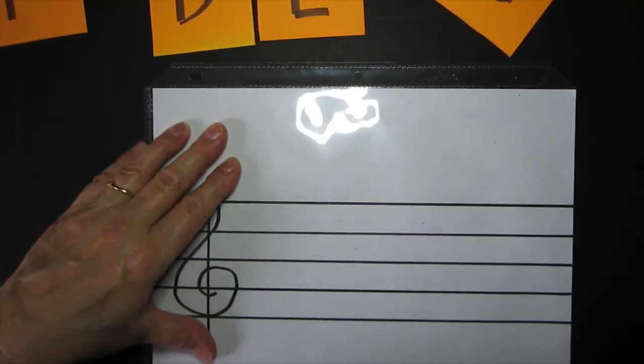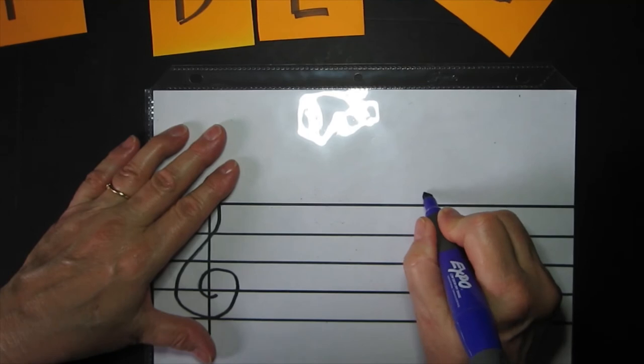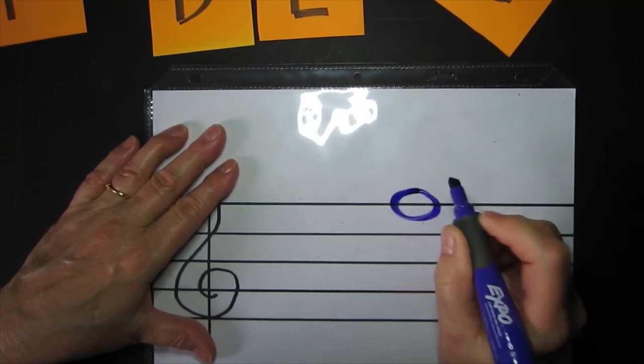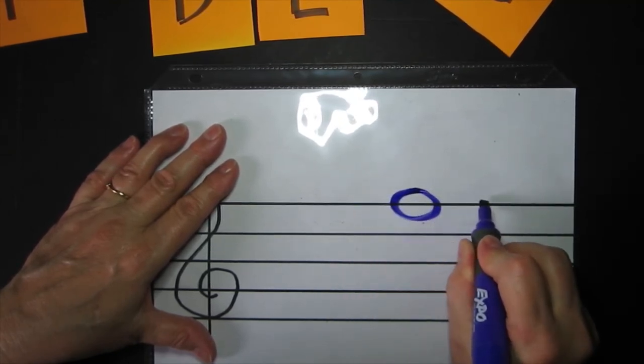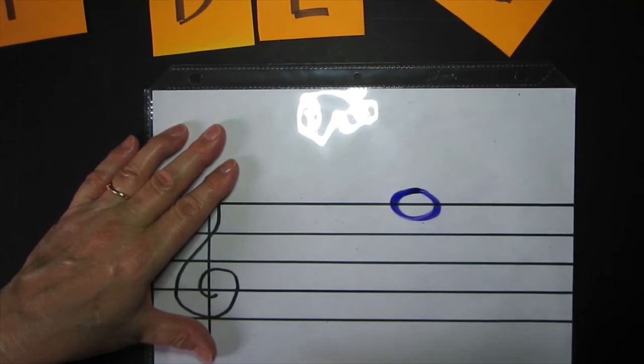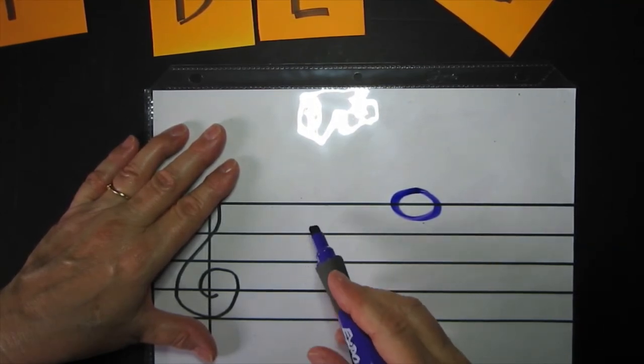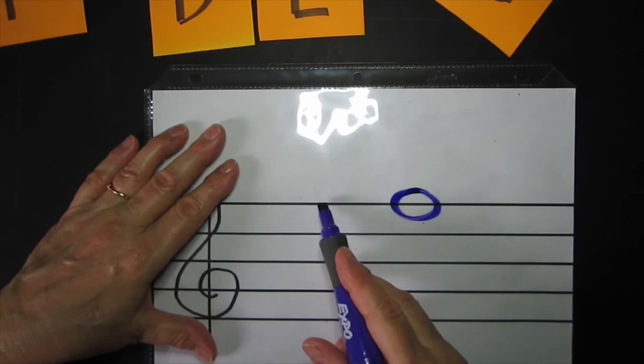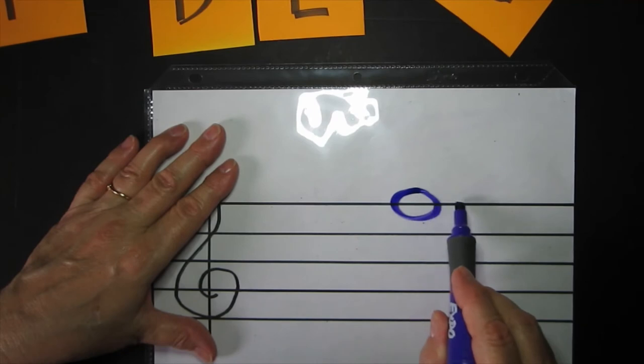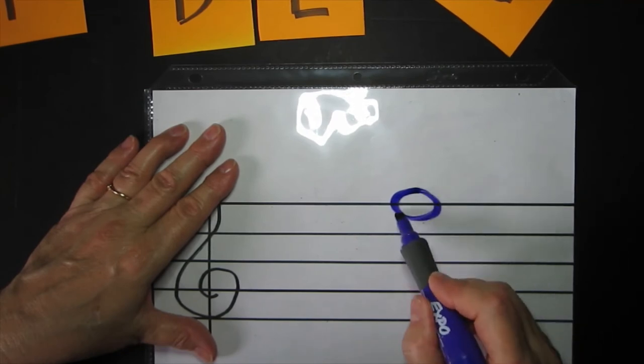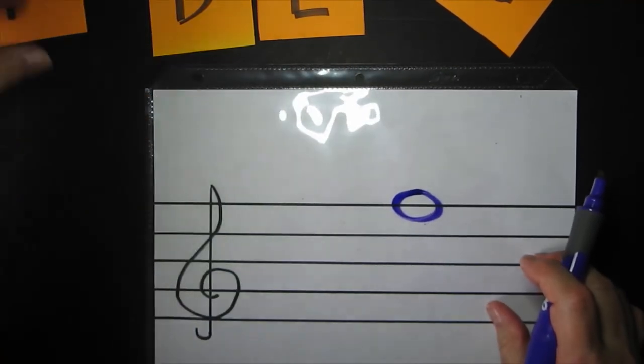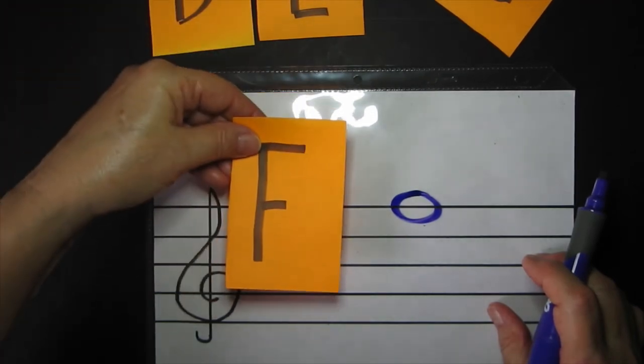Let's go for another one. A line note this time. Notice how the line's going straight through the note. Remember our saying. Every good bunny deserves fun. Fun starts with F and that F is the name of this line. So the pitch name is F and you would signal the F card.